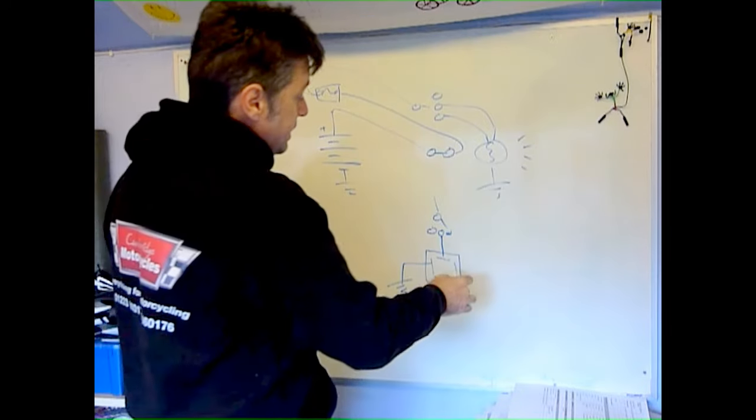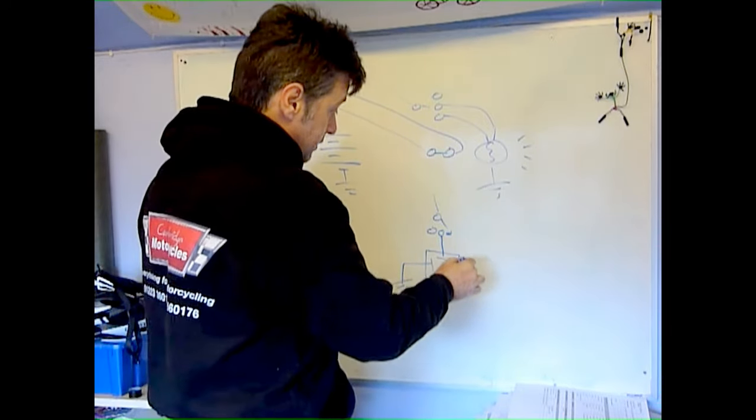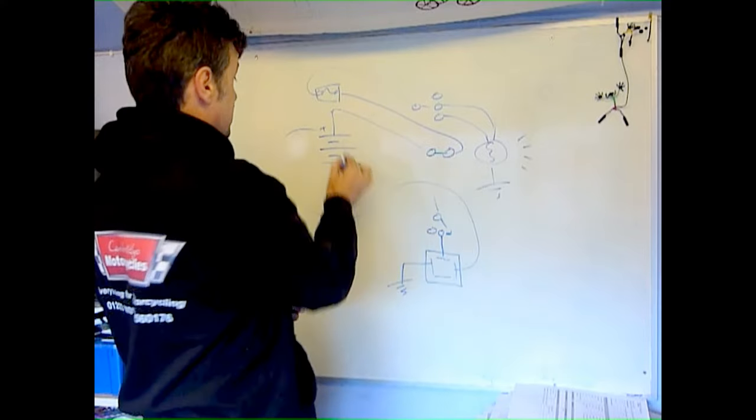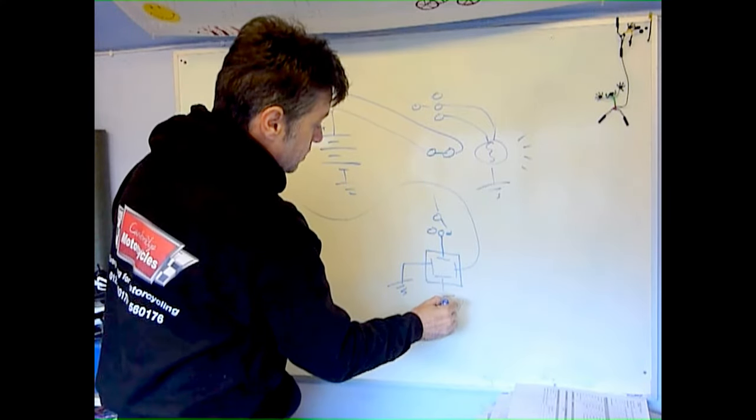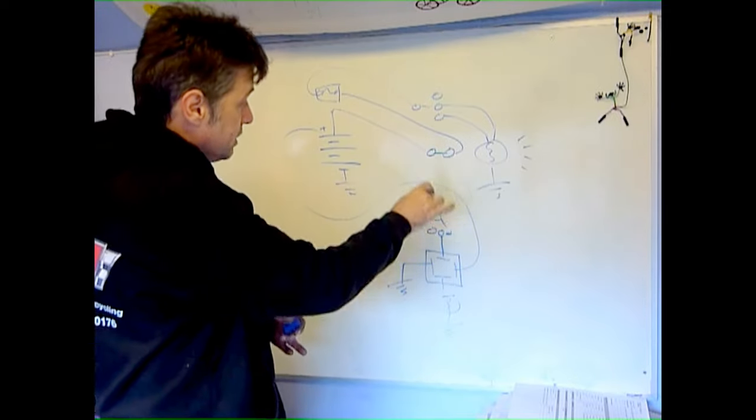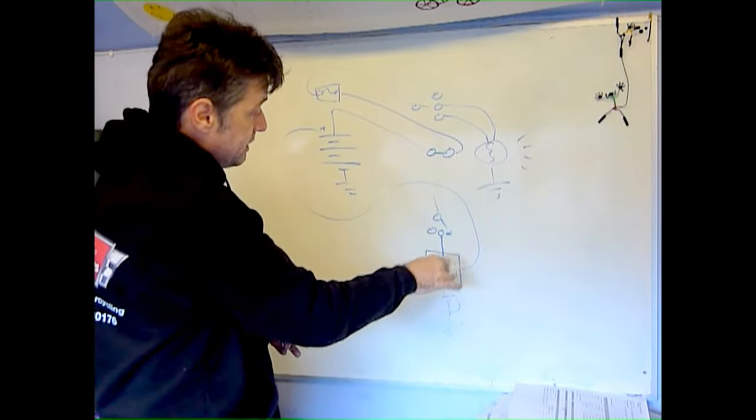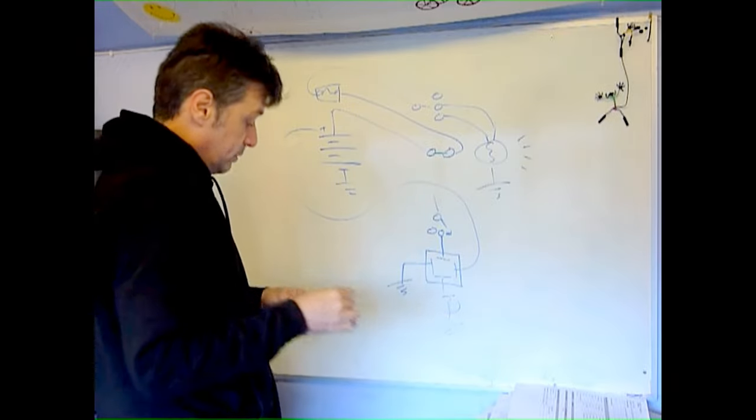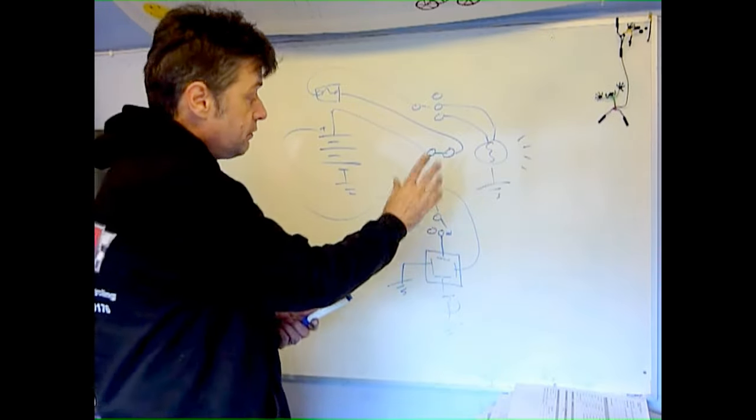And then the high current side: we have one pole goes to the battery, other goes through the bulb to ground. So we use the low current going through the handlebar switch to make that high current circuit so the bulb comes on. That means we're not drawing a high current through